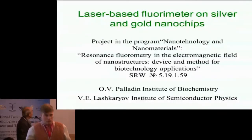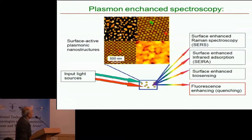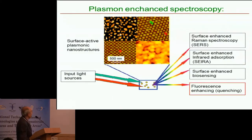Surface enhancement is very important in the world. Here you can see the methods where surface enhancement is applied: surface-enhancing Raman spectroscopy, infrared absorption, enhancing in biosensing. And our method is fluorescence — enhancing of fluorescence.